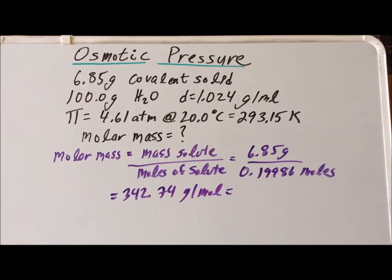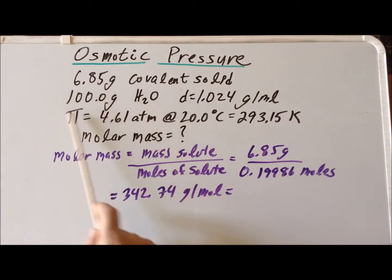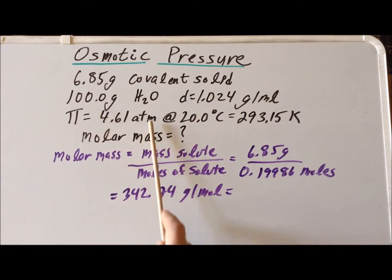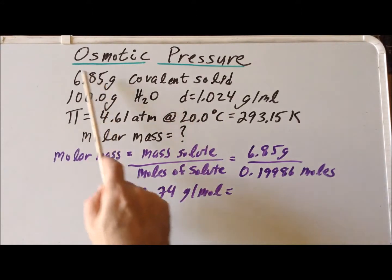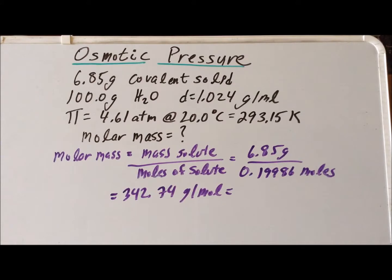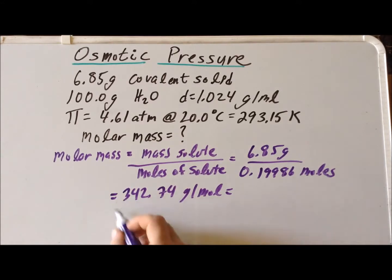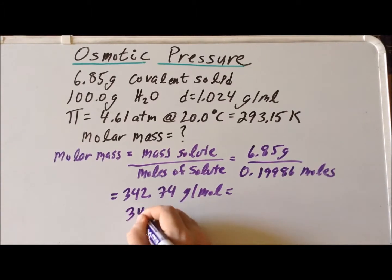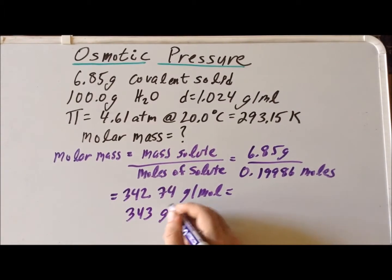One important thing to notice: the mass of the water has four significant figures, the density has four significant figures, the osmotic pressure has three significant figures, the temperature has three significant figures, and the mass of the covalent solid has three significant figures. Therefore, our final answer can have no more than three significant figures, so we round to 343 grams per mole.